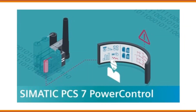PCS7 Power Control. PCS7 Power Control is a component of the Simatic PCS7 software platform. It is specifically designed to control and monitor power generation and distribution systems, including processes such as energy management, load shedding, and power quality management.